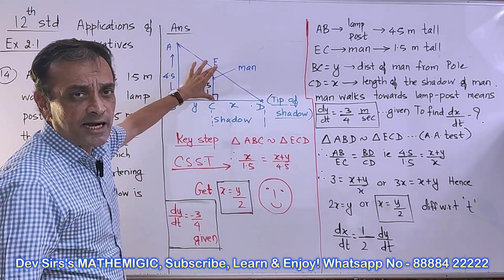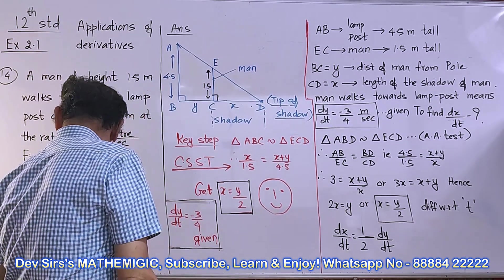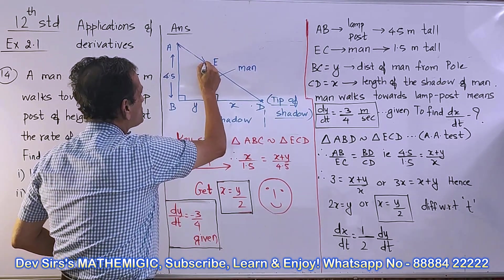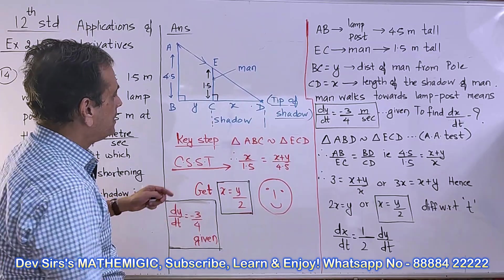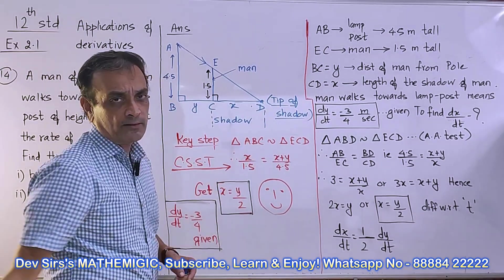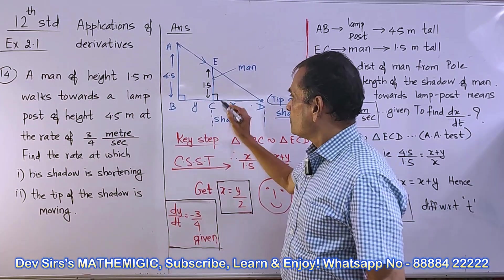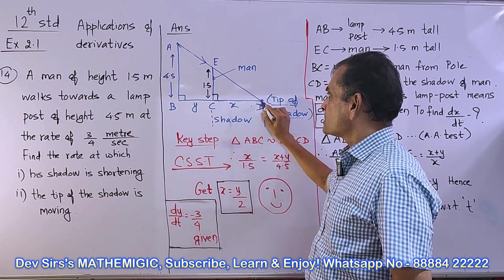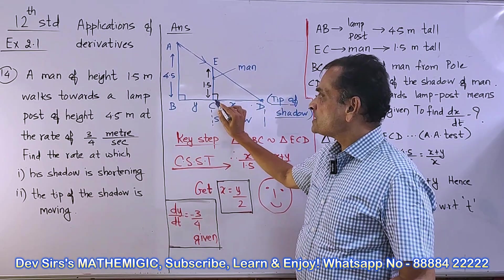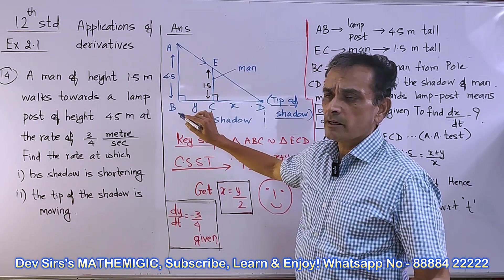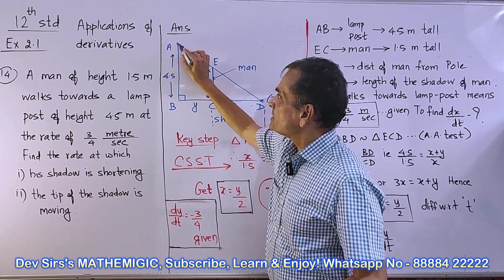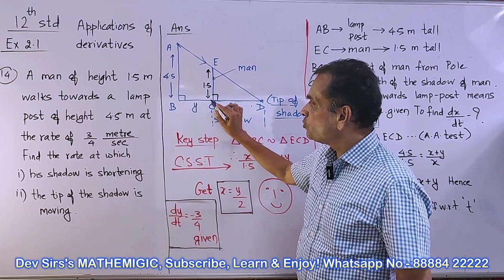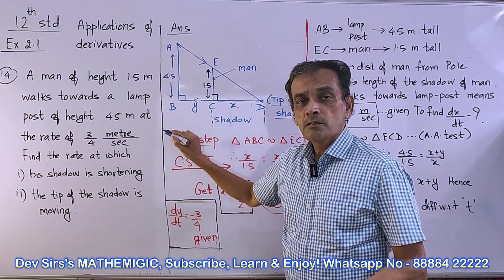We will see the diagram now. This is the lamppost of height 4.5 meters. This is the person standing in front. When the light falls like this from the lamppost, ray of light, when it falls on the ground, this becomes the shadow of the man. His height is 1.5 meters.